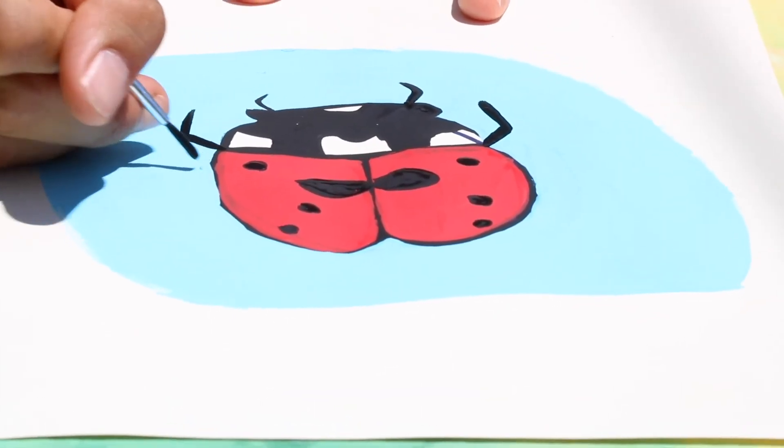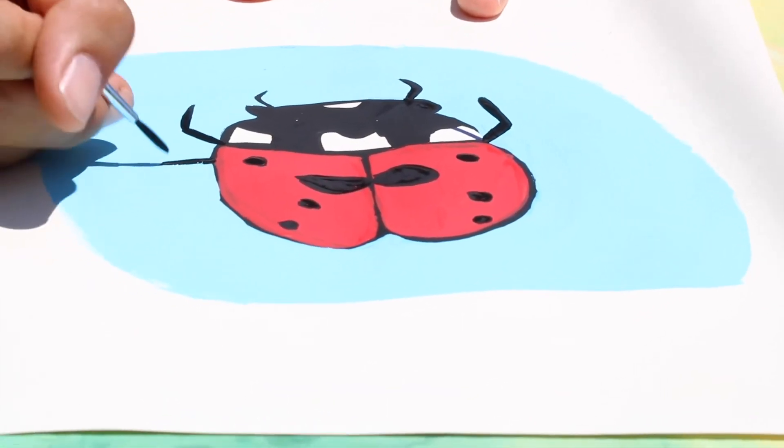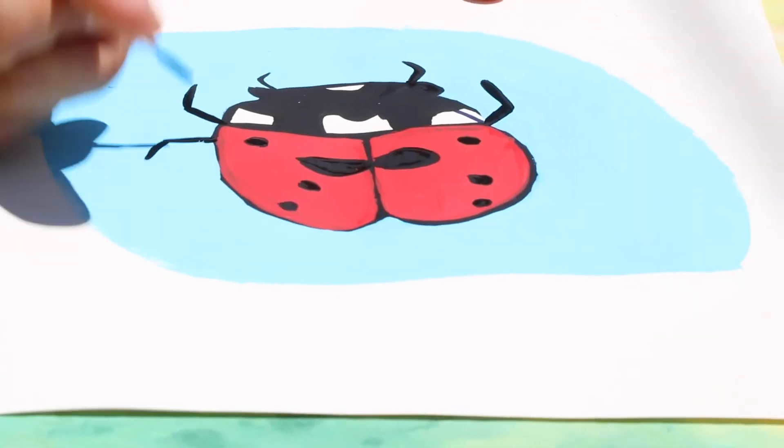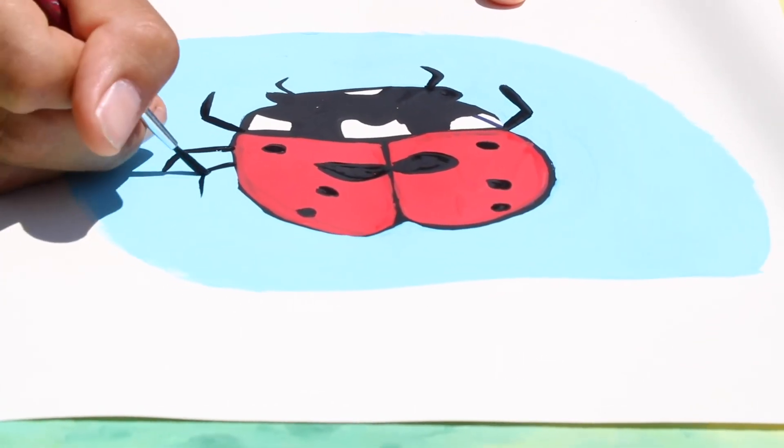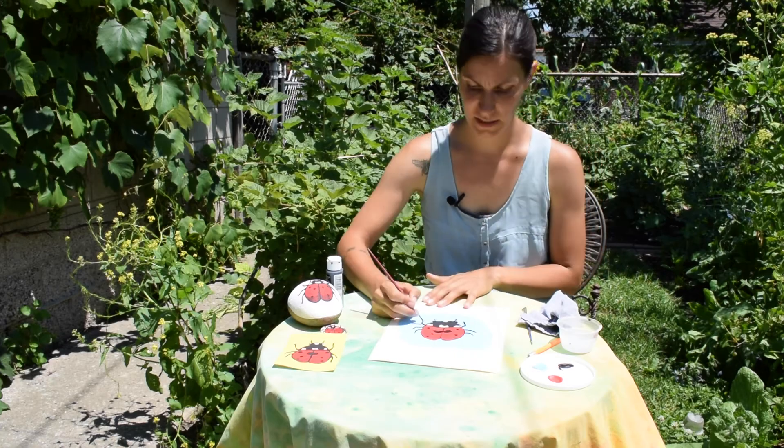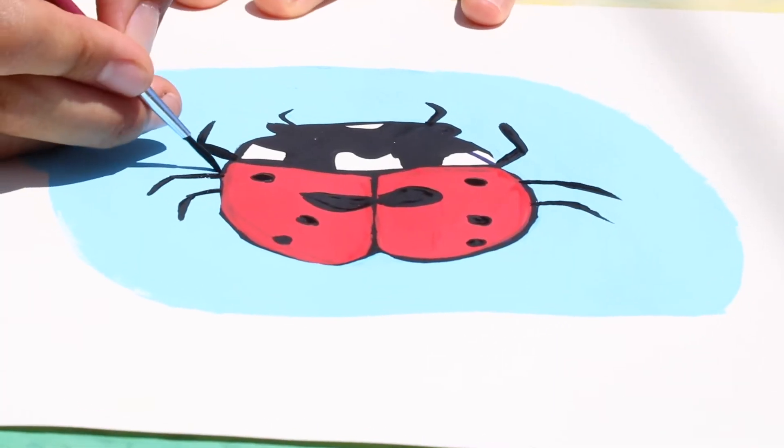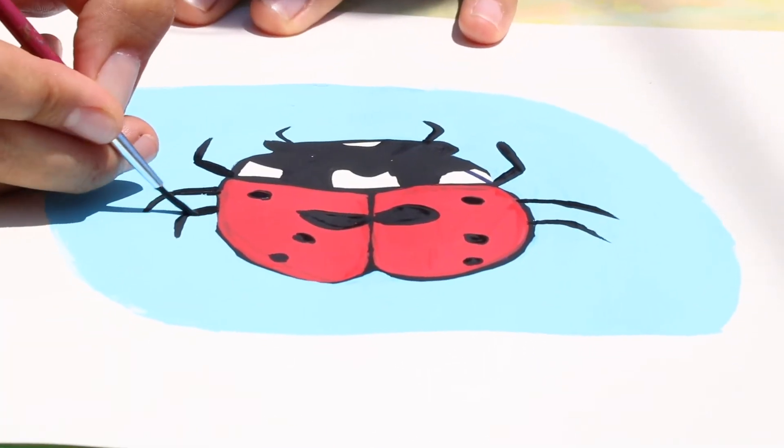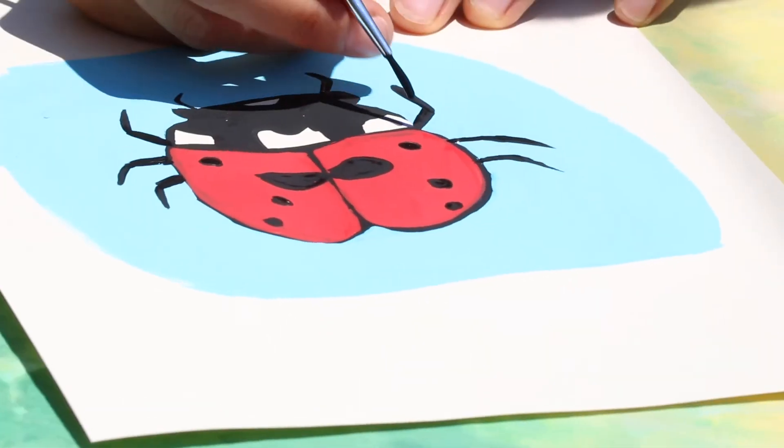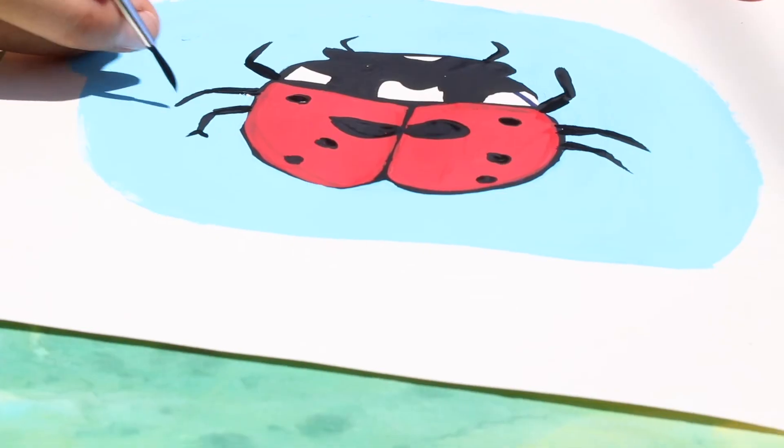And for the legs we'll remember our front legs going up and then bending up and then bending, and then a little bit down, out and bend, out and bend. If you want to make it a little bit more detailed you can make the top part of the leg a little bit thicker.